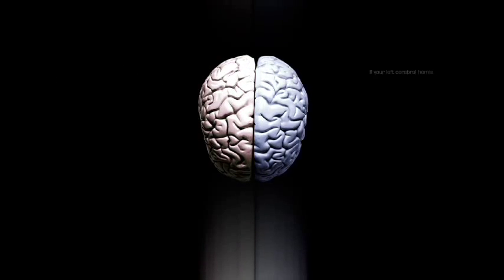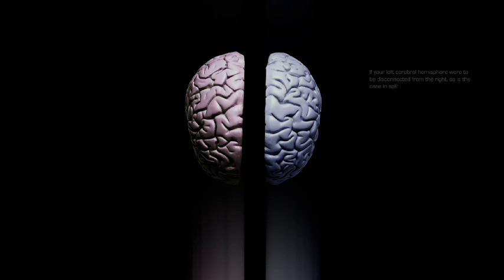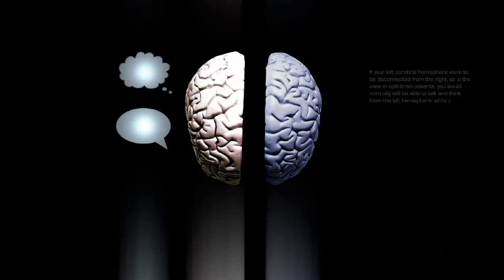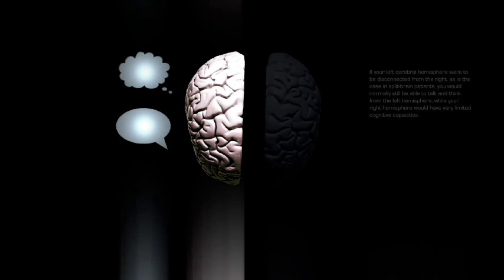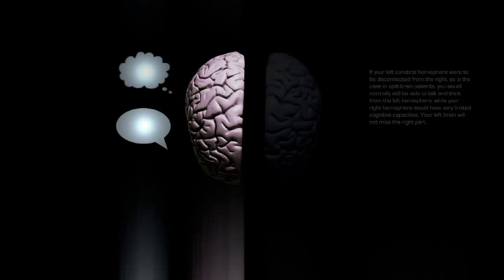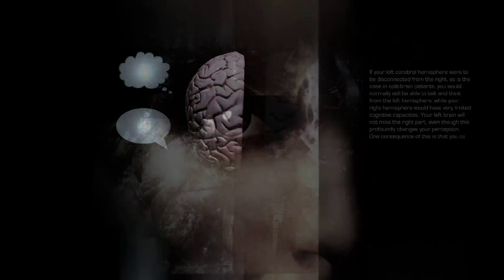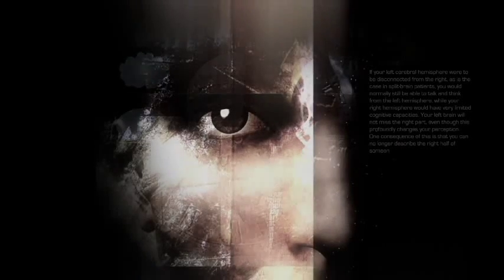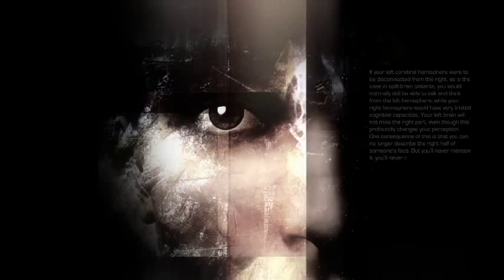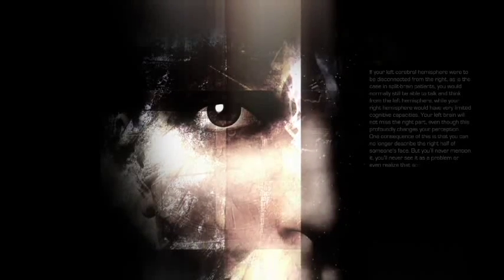If your left cerebral hemisphere were to be disconnected from the right, as is the case in split brain patients, you would normally still be able to talk and think from the left hemisphere, while your right hemisphere would have very limited cognitive capacities. Your left brain will not miss the right part, even though this profoundly changes your perception. One consequence of this is that you can no longer describe the right half of someone's face, but you will never mention it. You will never see it as a problem or even realize that something has changed. Since this affects more than just your perception of the real world and also applies to your mental images, it is not just a sensory problem, but a fundamental change in your consciousness.